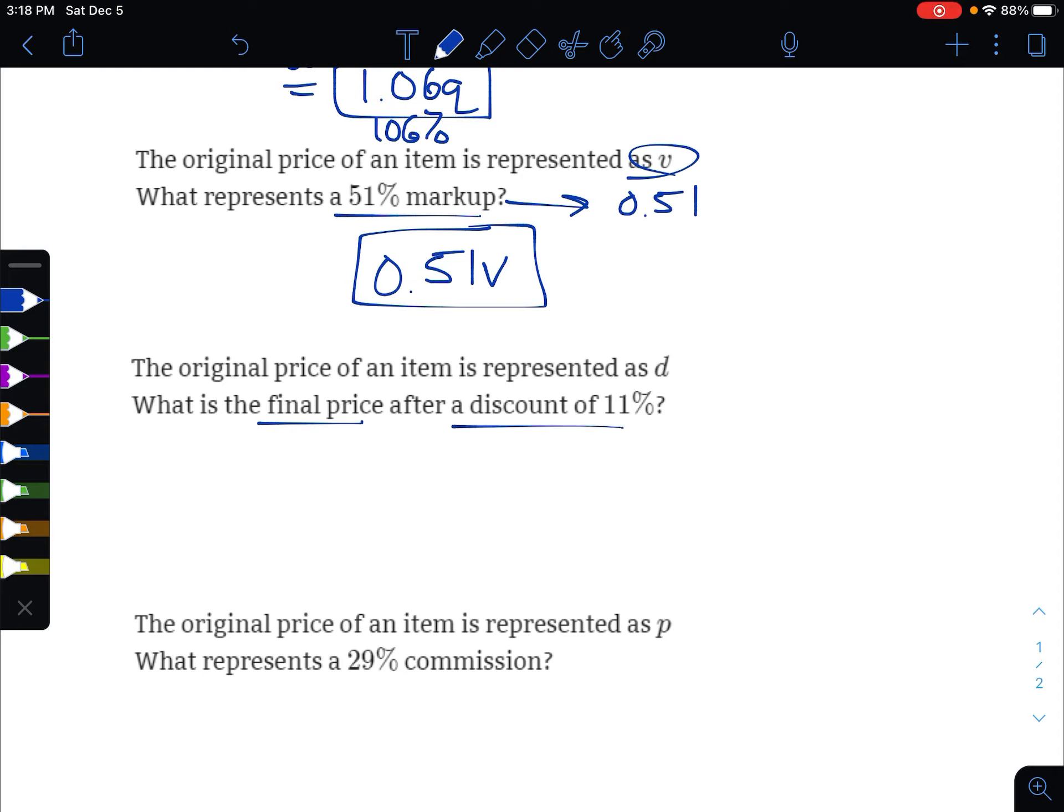For the next one here, it wants the final price after a discount of 11% on the variable d. 11% as a decimal would be 11 divided by 100, which is 0.11, so that times d. If it's a discount, we want the final, we take that away from the original price. And again, to simplify this, this would be 1d take away 0.11d.